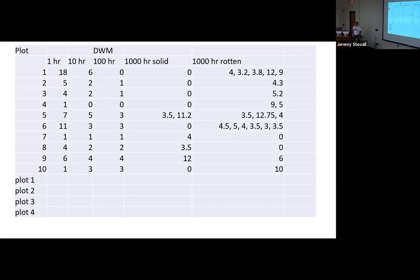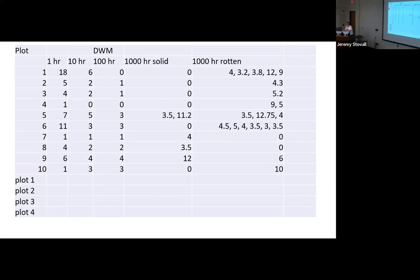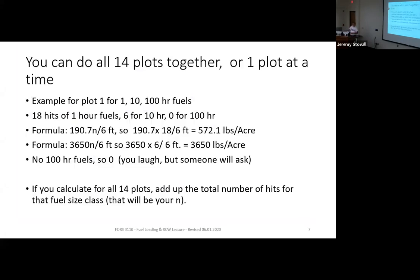You'll get a spreadsheet where each crew fills in four plots. For thousand-hour fuels — solid or rotten — you'll see intersection lengths like 3.5 inches separated by commas. Watch for those commas carefully. For an example using plot one: 18 hits for one-hour fuels, six hits for ten-hour fuels, and none for 100-hour fuels. If you have no hits in a size class, your mathematical answer is zero.